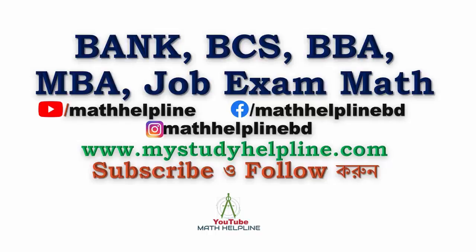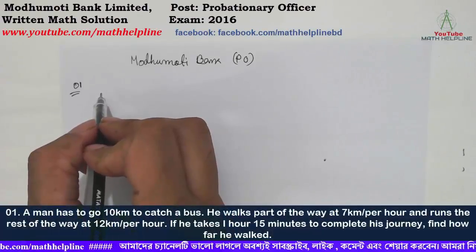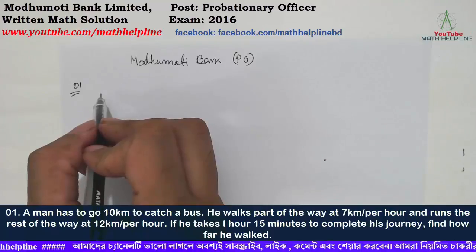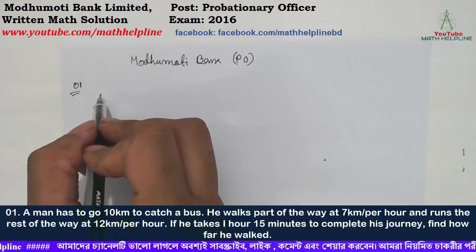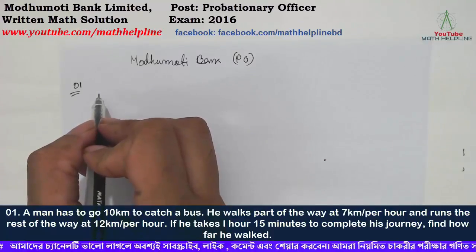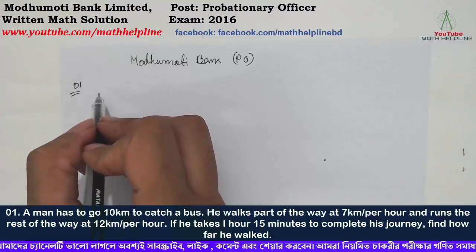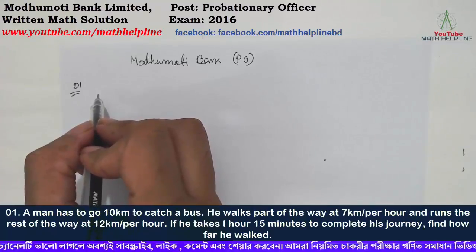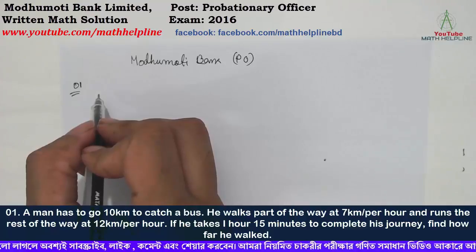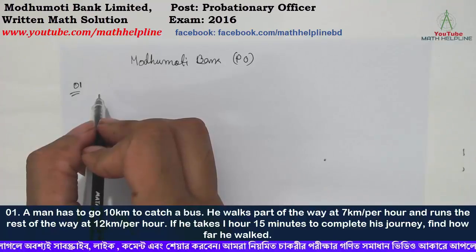So, the first problem: a man has to go 10 km to catch a bus. He walks part of the way at 7 km per hour and runs the rest of the way at 12 km per hour. If he takes 1 hour 15 minutes to complete the journey, find how far he walked.